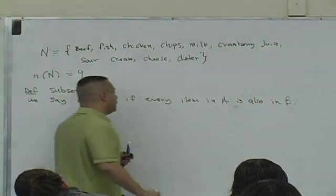So, we say A is a subset of B if every item in A is also in B. This is a definition, but what we're really saying is something like this.